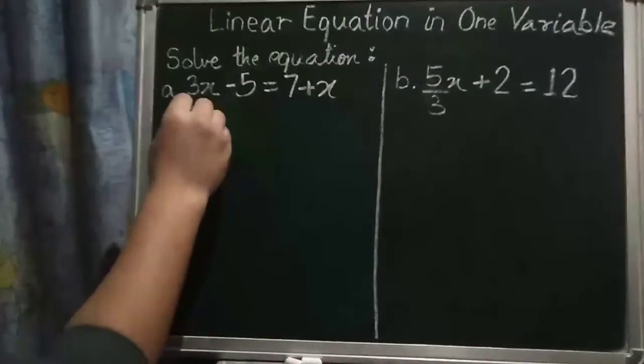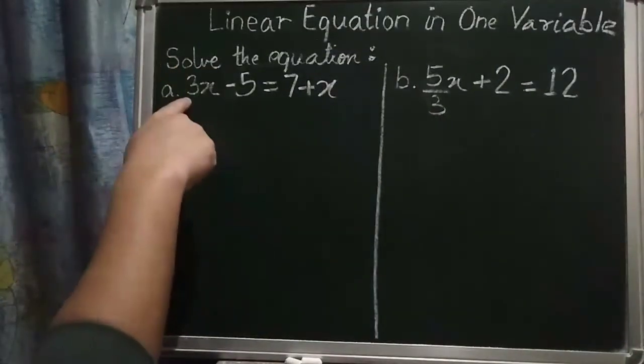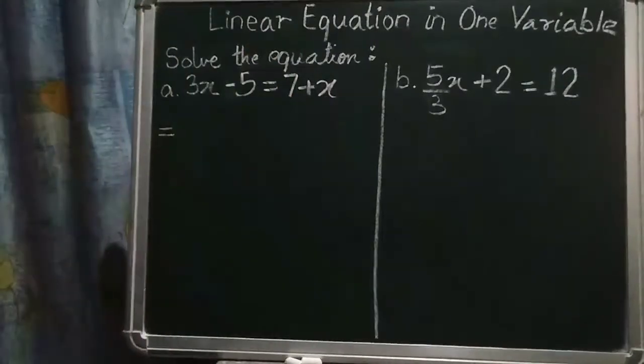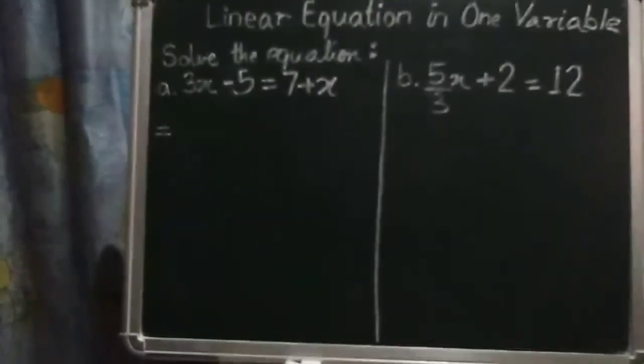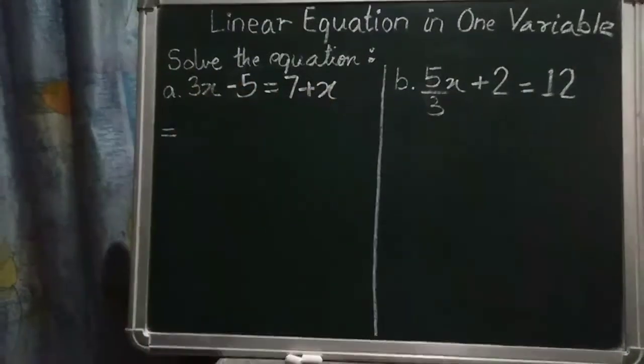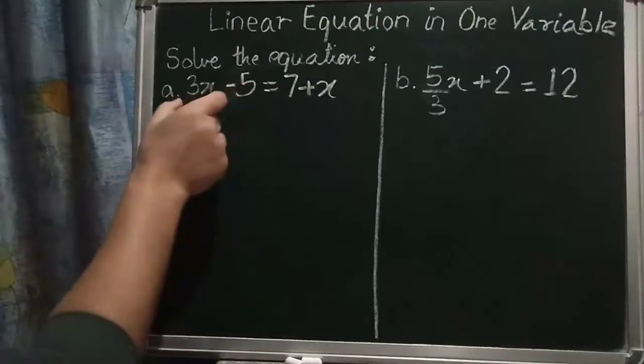So what we have to learn here is, see 3x minus 5 is equal to 7 plus x. How to do this kind of sums? So what we have to do is, we have to bring x, x one side. All the x at one side.